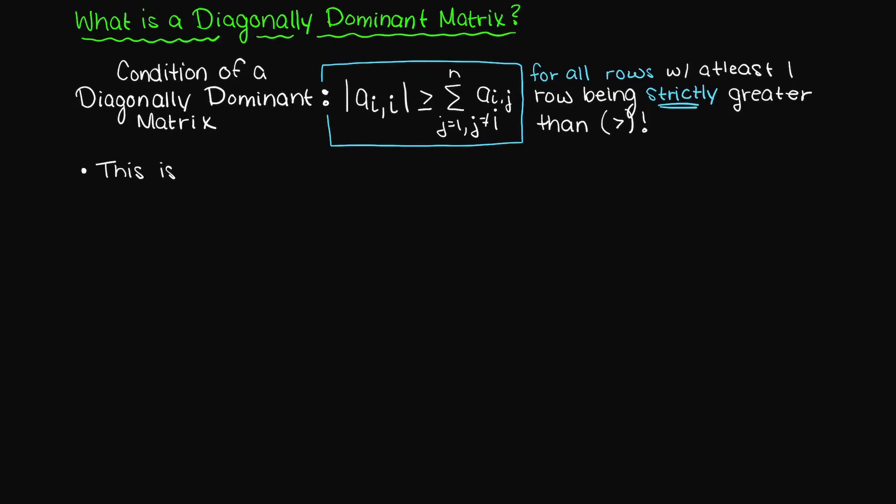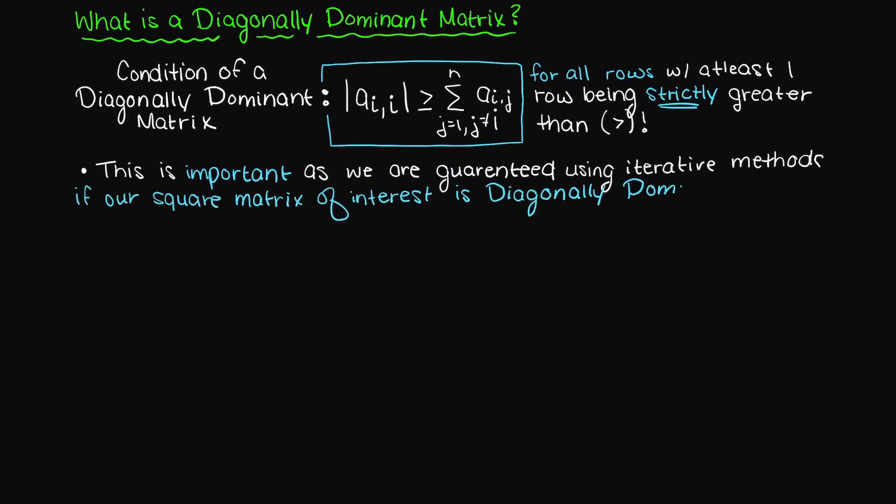We're basically saying here that we know our matrix will converge and will get an actual answer if in each of these rows the diagonal element is dominant over the rest of the elements in that specific row.